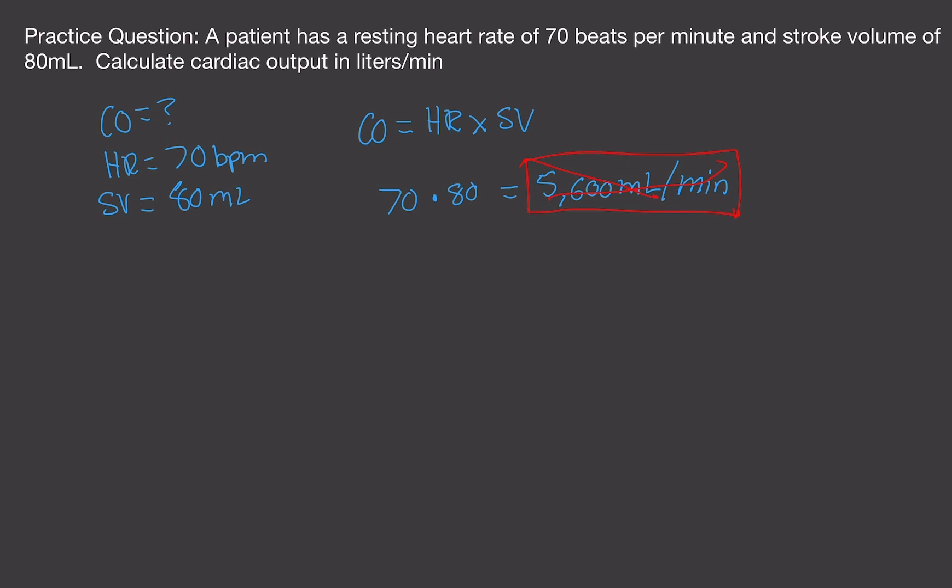Professors love to trick you like this. The reason it's not the answer is because the question states calculate cardiac output in liters per minute, not milliliters per minute. So you have to be careful. Especially if this is a free response question, slow down and make sure you read the question and understand the units that you are given.